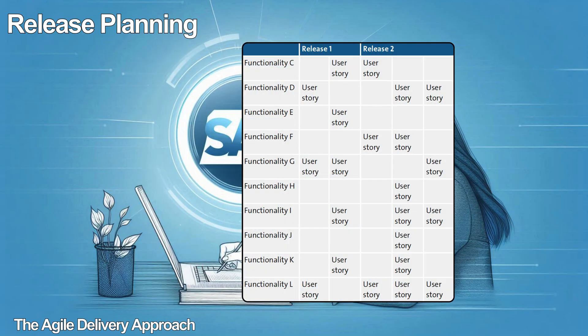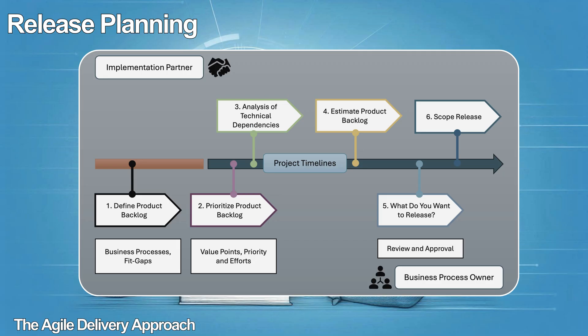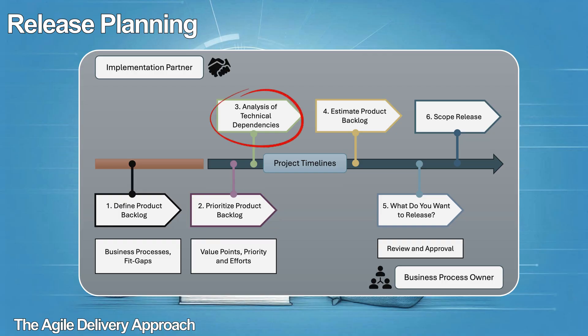The six steps in release planning are: firstly, define the product backlog, where the team identifies the required business capabilities in the solution and any additional configuration, extension, or integration. After that, the team prioritizes the product backlog as a second step. Thirdly, they carry out the analysis of technical dependencies. It is important that the development team identifies the technical dependencies to ensure that the user story is ready per the definition of ready and delivered per the definition of done.